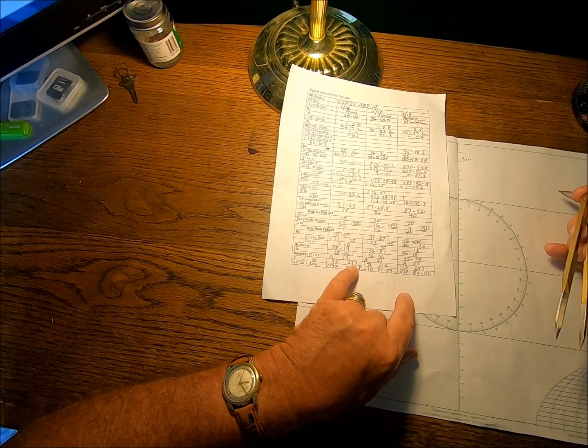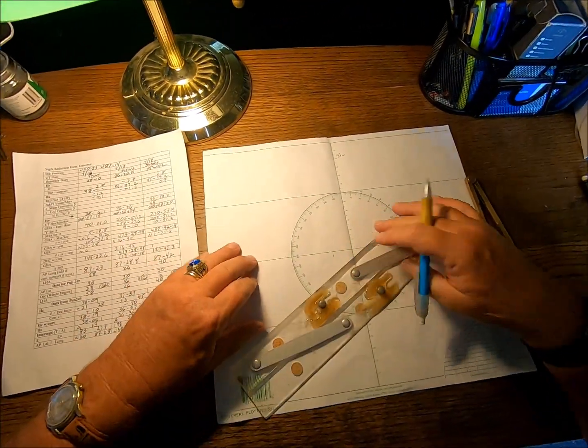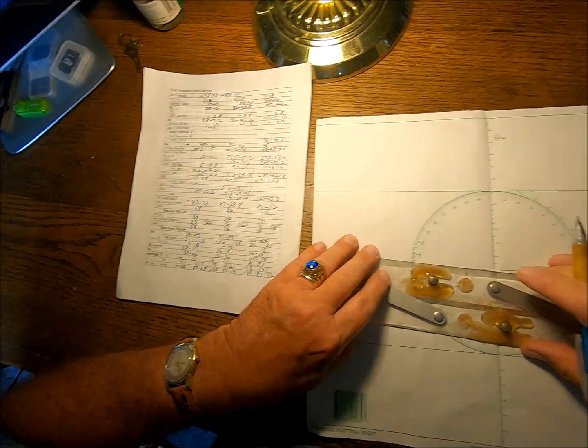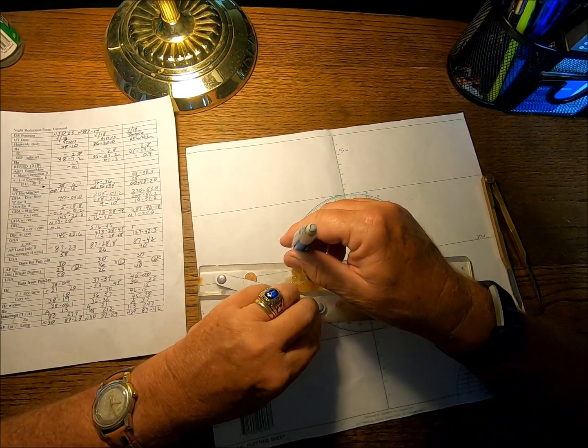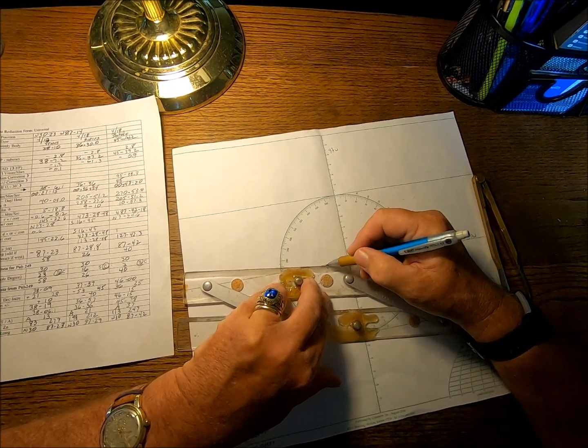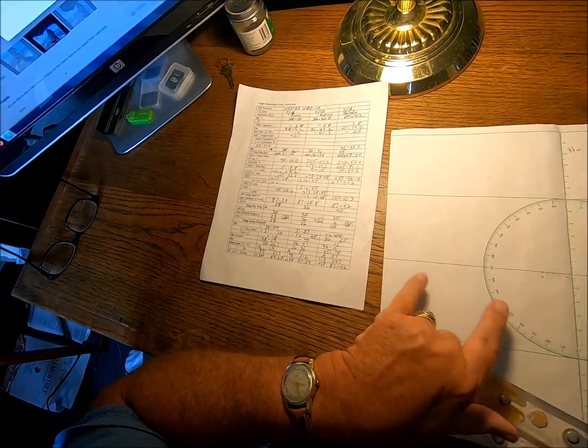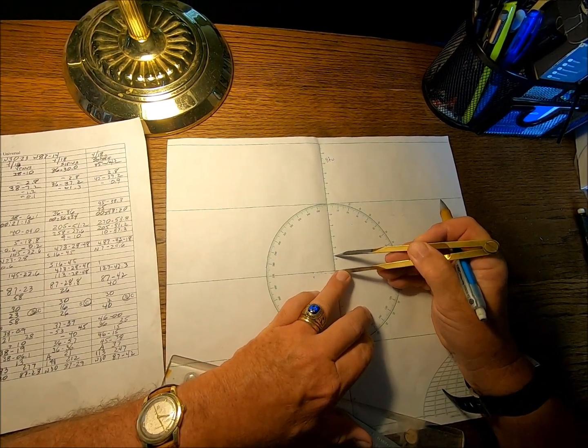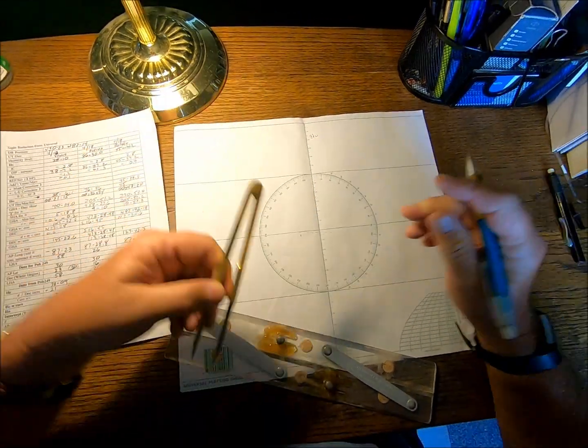Now, the bearing, the true azimuth is 277 away at 13. So, we'll take our dividers, put our divider in the middle, put the other one at 277 right here, our pencil. We'll move that down, and we'll be going away. So, we want to make a dotted line away from the true bearing of 277. And we want to come out 13 miles. So, we'll pick off 13 miles here and make a little mark.